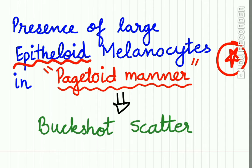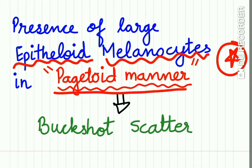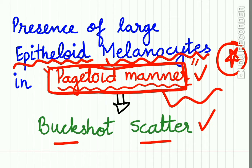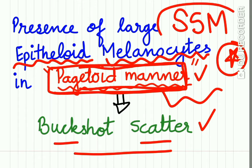These large epithelioid melanocytes are arranged in a pageotoid manner. The term 'pageotoid manner' describes spread of cells confined to the epithelium, not the connective tissue. This is also called buckshot scatter. Remember both terminologies — pageotoid manner and buckshot scatter — as characteristic features of superficial spreading melanoma.